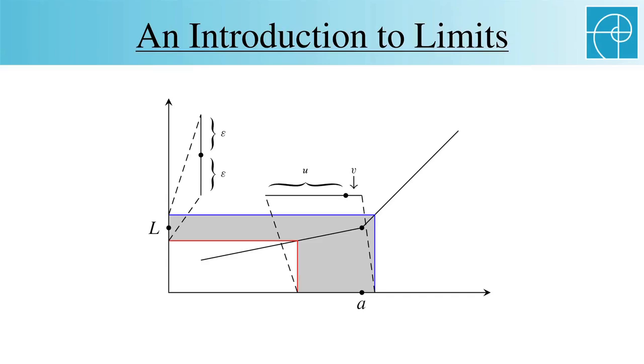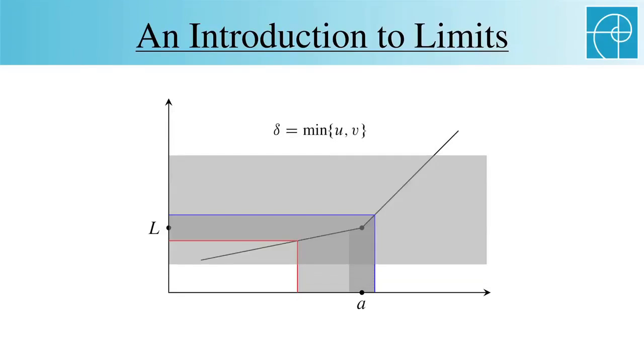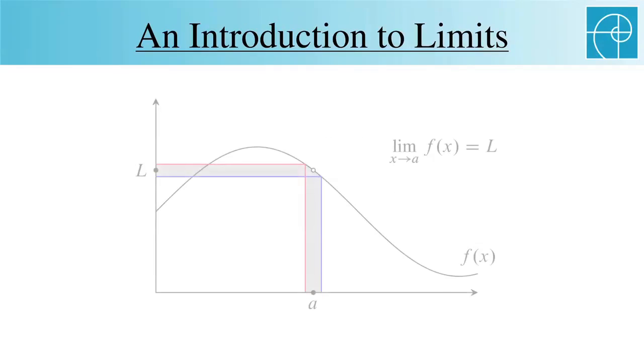That's okay though, since as long as we take delta to be the smaller of the two distances u and v, then the delta neighborhood around a is mapped inside the epsilon neighborhood around L, and that's what we really need. Going back now to the previous graph, note that it doesn't matter that we also have another interval on the x-axis that also yields the same interval around L. This happens a lot with functions that aren't one-to-one.